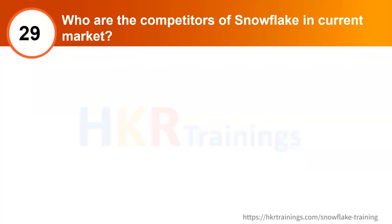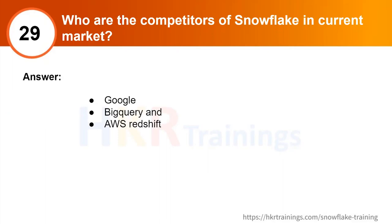Who are Snowflake's competitors in the current market? The main competitors are Google BigQuery and AWS Redshift, both providing unlimited scaling and cloud benefits. However, Snowflake wins in areas of data sharing, data marketplace, and ease of creating and maintaining compute resources — that's where Snowflake sets itself apart from Google BigQuery and Amazon Redshift.